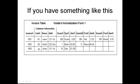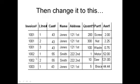Now if you have something like this where you have quantity 1, quantity 2, quantity 3, part 1, part 2, part 3 — again we have repeating groups. So instead of having this table, we should have invoice 1001 repeated three times, with all the parts, all the quantities, and all the amounts for each invoice.